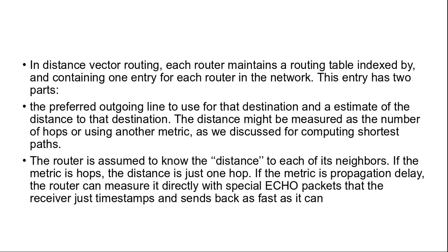An example is assumed that delay is used as a metric and that the router knows the delay to each of its neighbors. Once every t millisecond, each router sends to each neighbor a list of its estimated delay to its destination. It also receives a similar list from each neighbors. Imagine that one of these tables has just come in from neighbor x with x being x estimate of how long it takes to get to router i.